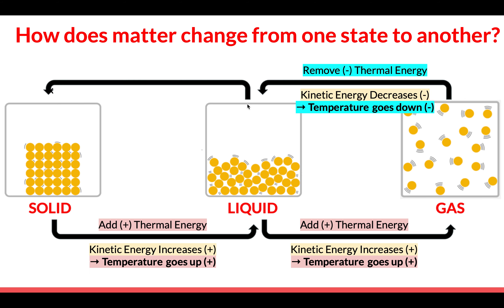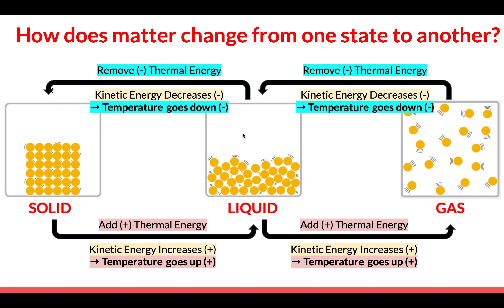How can we go from a liquid to a solid? Again, we have to remove thermal energy. Imagine putting liquid water into the freezer — when you do that, you're removing thermal energy from the liquid water. Thermal energy will be taken away, which means these particles are going to start to move less and less. Their kinetic energy will decrease, the temperature will drop, and soon enough all of the particles will start to get very, very tightly packed together, vibrating side to side instead of sliding past one another.